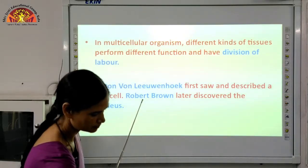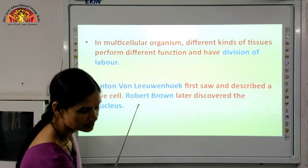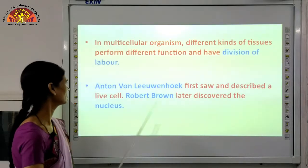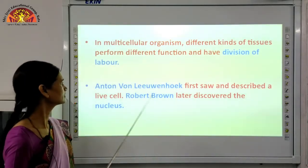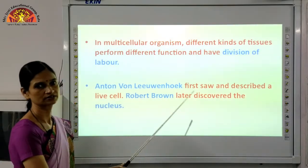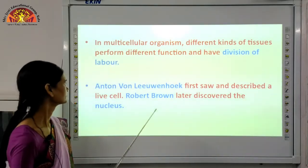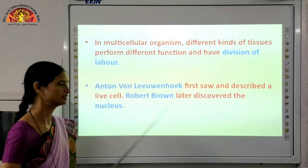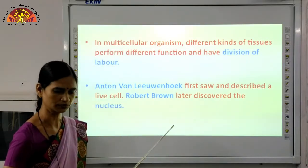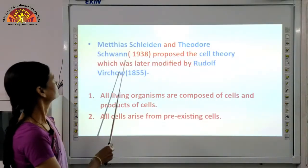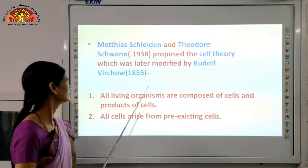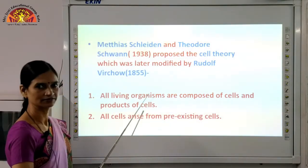Anton von Leeuwenhoek first saw and described a live cell. Although Robert Hooke discovered the first cell, that was a dead cell. Anton von Leeuwenhoek saw the first live cell under his microscope. And Robert Brown discovered the nucleus. Now we are talking about the discoveries related to cell. Matthias Schleiden and Theodor Schwann are the two scientists who proposed the cell theory — which we have already studied in 9th class, but we should revise it.